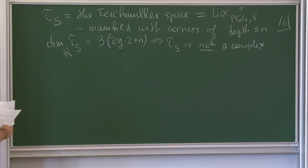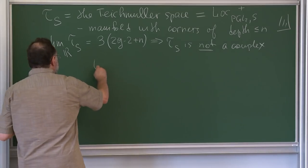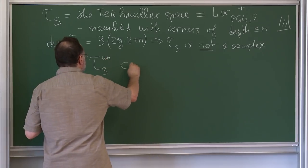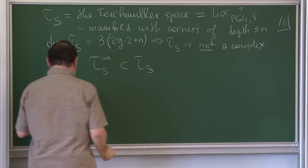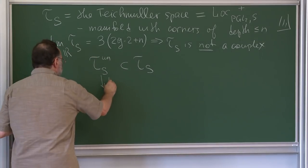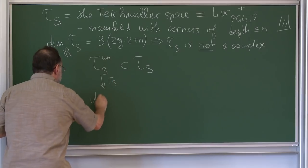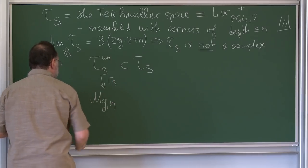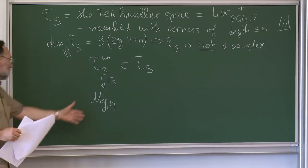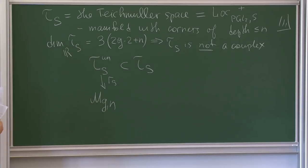However, if you consider the subspace of representations with unipotent monodromy, then it is algebraic — at least a complex manifold. The mapping class group acts, and the quotient is M_{g,n}, the moduli space of genus-g curves with n punctures. That's a definite algebraic variety and this is its universal cover.